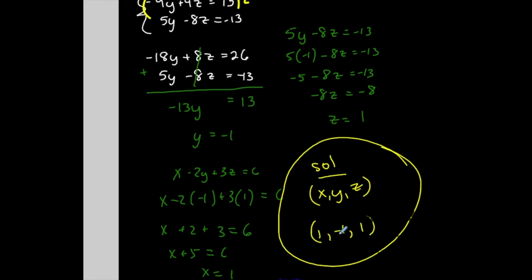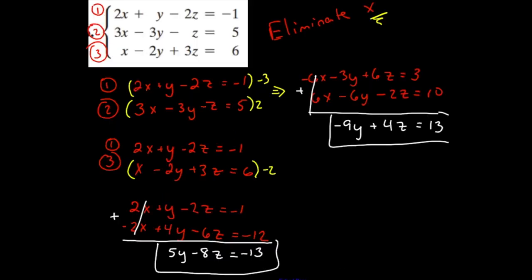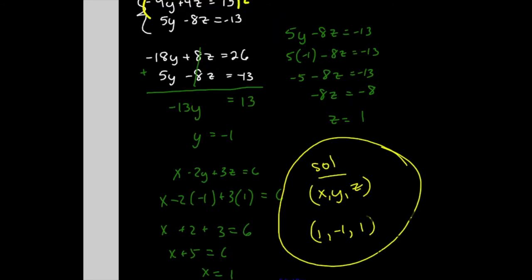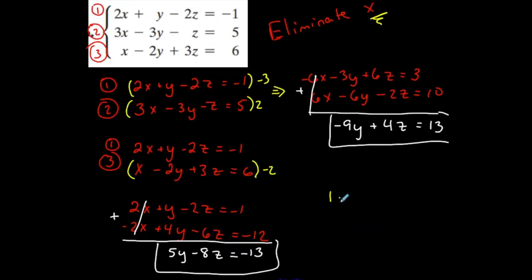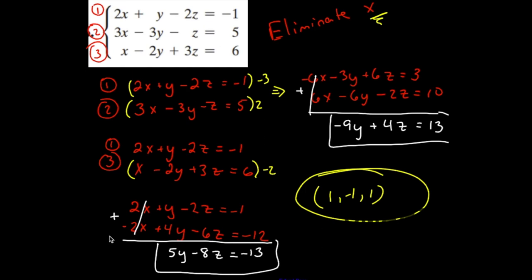If I'm not sure my solution is correct, I plug it back into all three equations and it should work for all three. For (1, −1, 1): equation 1 gives 2 − 1 − 2 = −1 ✓; equation 2 gives 3 + 3 − 1 = 5, which simplifies correctly ✓; equation 3 gives 1 + 2 + 3 = 6 ✓. So this is my solution.